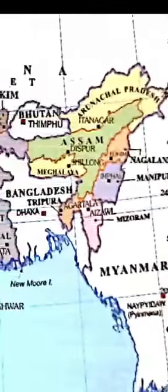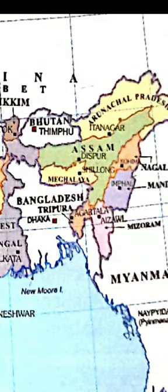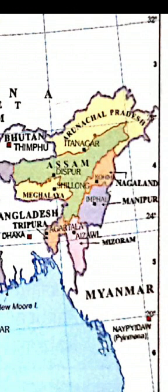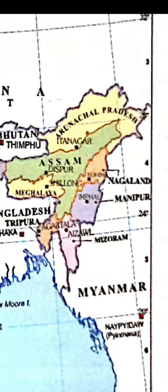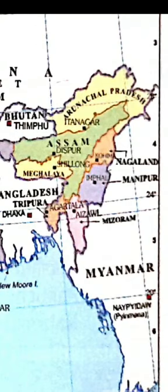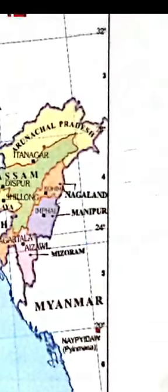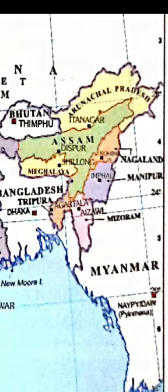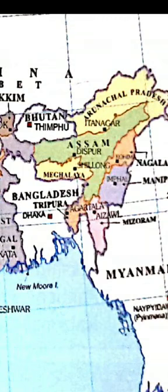There are seven sister states in eastern India. These small states are called the seven sister states, and they are: Arunachal Pradesh, Assam, Meghalaya, Manipur, Mizoram, Nagaland, and Tripura.